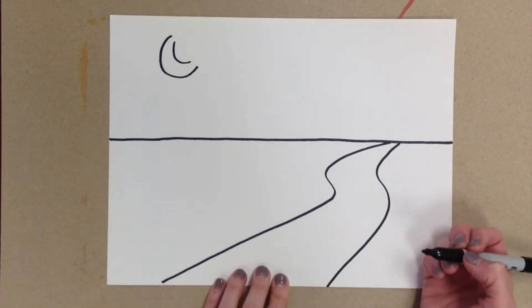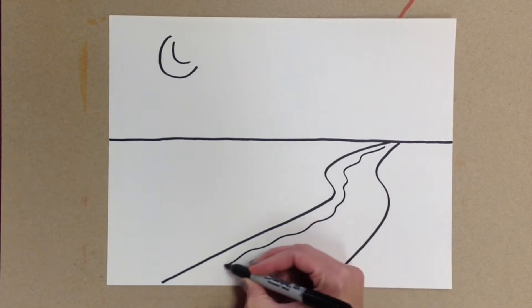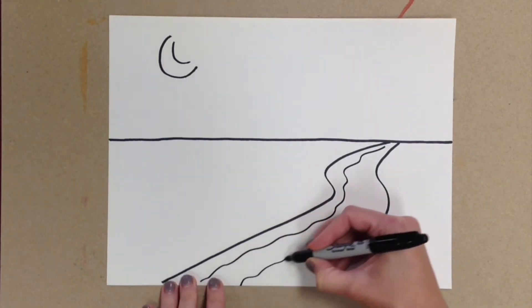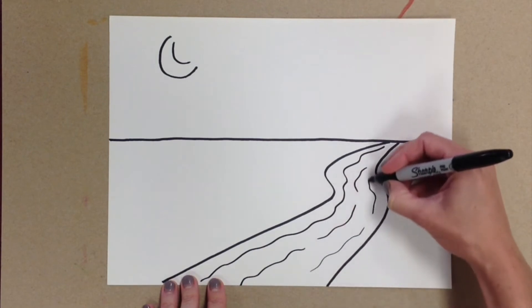Refer back to the line attachment or handout to look at different lines that will work for your scene. For example, I'm using wavy lines in my river here.